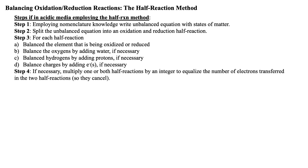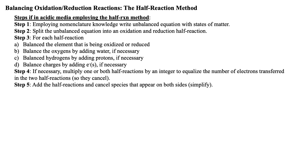Now, one or both half-reactions are ready to be multiplied by an integer to equalize the number of electrons transferred in the two half-reactions, so that they cancel. Next, add the half-reactions and cancel species that appear on both sides — in other words, simplify. Followed by checking the charges and atoms' balance. These steps will be reviewed and reinforced within subsequent sample exercises.